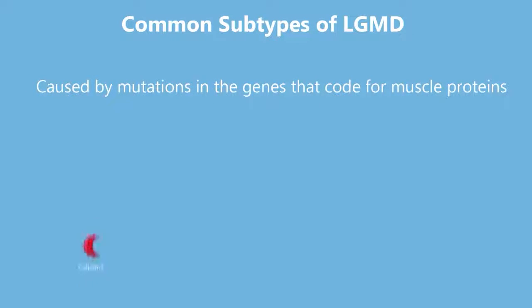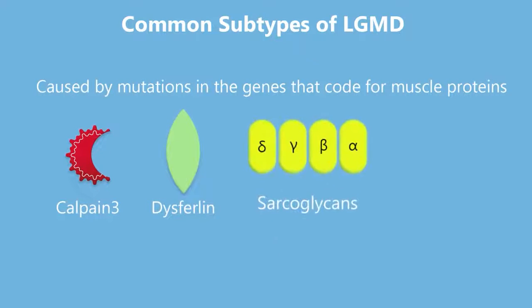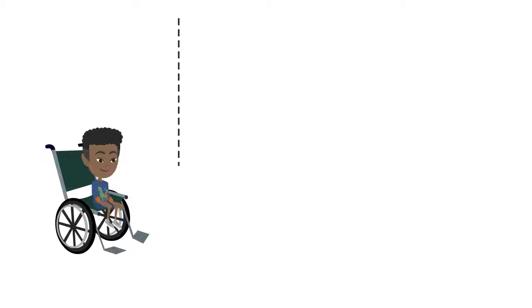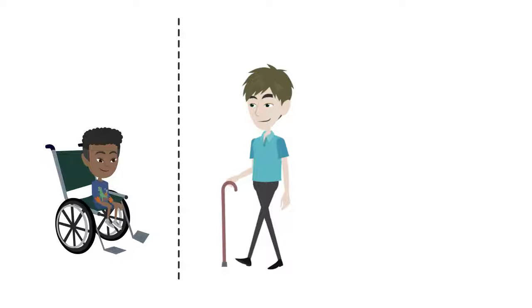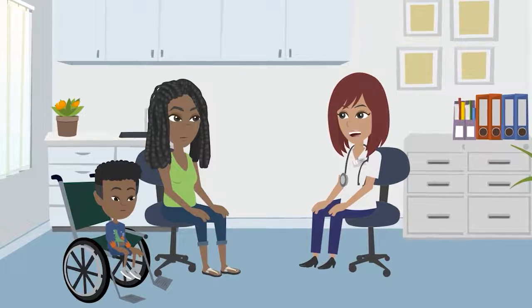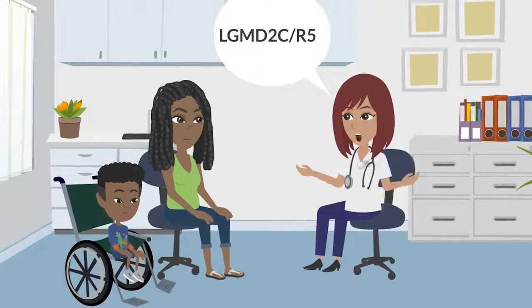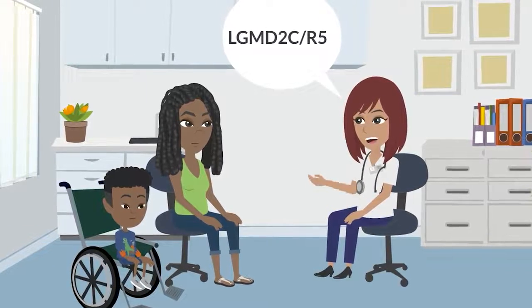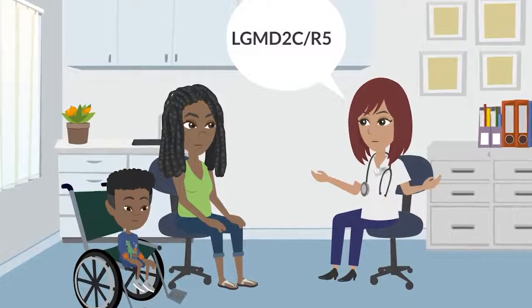Some of the more common subtypes of LGMD are caused by mutations in the genes that code for muscle proteins, including calpain-3, dysferlin, the four sarcoglycans, and fucutin-related protein, or FKRP. Each protein plays a role in muscle function, and mutations to their respective genes can result in different phenotypes of muscular disease. Knowing the LGMD subtype of patients allows specialists to anticipate serious cardiac and pulmonary issues and proactively screen these patients.